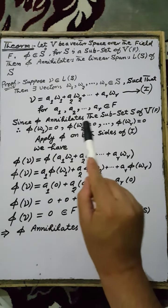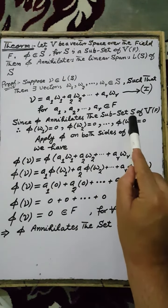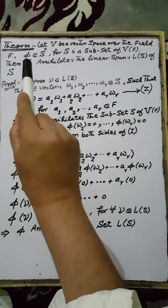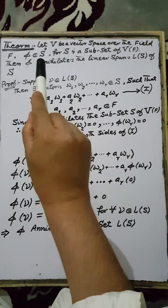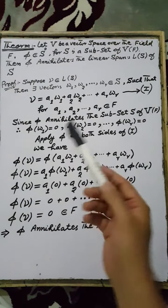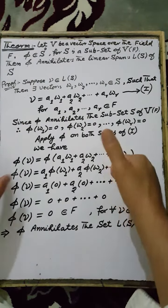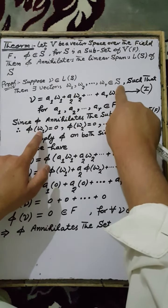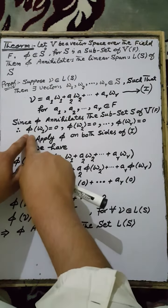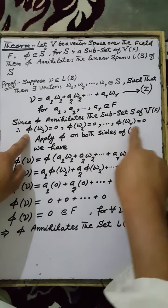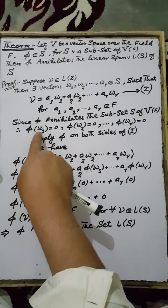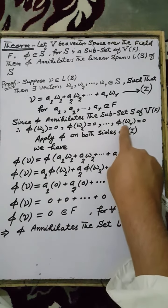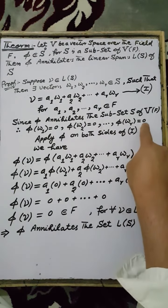Since Phi annihilates the subset S of the vector space V over the field F, according to the hypothesis, the image of each element W1, W2, up to WR of the set S under the linear functional Phi is equal to 0. That is, Phi(W1) = 0, Phi(W2) = 0, and so on, Phi(WR) = 0.